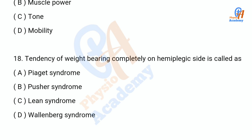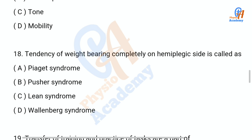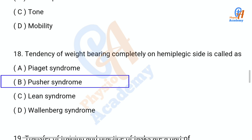Question number 18: Tendency of weight bearing completely on the hemiplegic side is called as — option A: Paget syndrome, option B: pusher syndrome, option C: lean syndrome, option D: Wallenberg syndrome. The correct answer is option B: pusher syndrome.